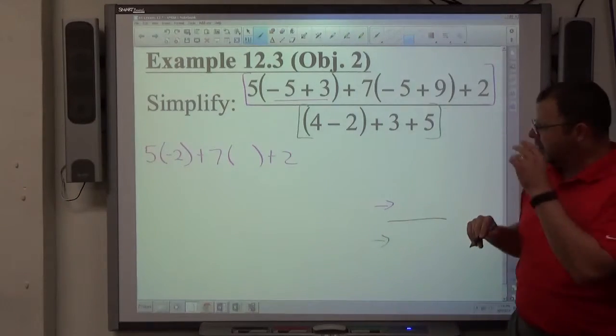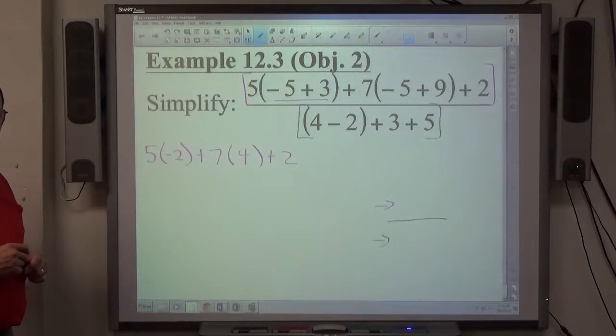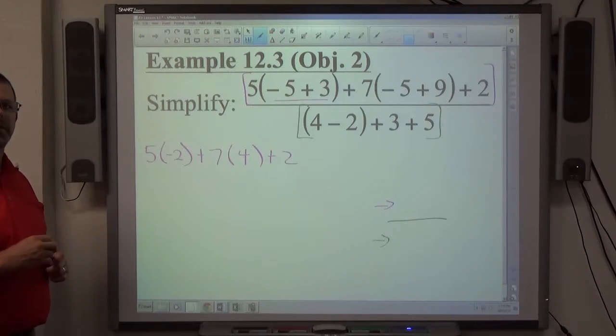Parker, what would negative 5 plus 9 be? Positive 4. Why did you subtract? Because 9 is bigger than 5. That's why it's positive. Subtract because the signs are different.